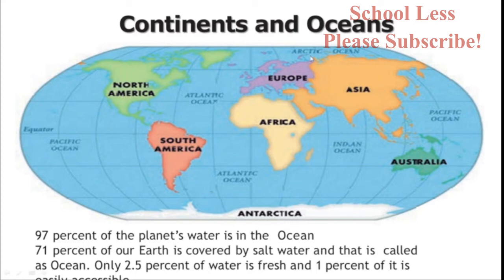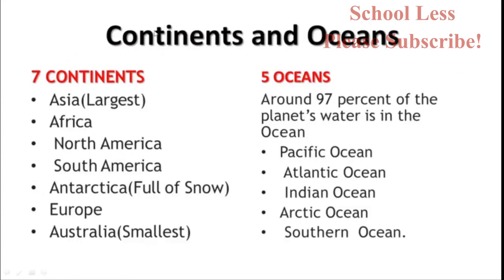There are seven continents: North America, South America, Africa, Europe, Asia, Australia, and Antarctica. Antarctica is covered by snow and ice. Asia is the largest continent. Australia is the smallest continent.